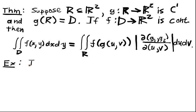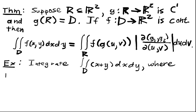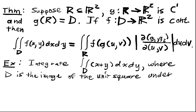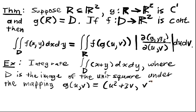So let's suppose we want to integrate the integral over the domain D of x plus y dx dy, where D is the image of the unit square under the mapping g of u, v is equal to u squared plus 3v, v squared plus 3u.